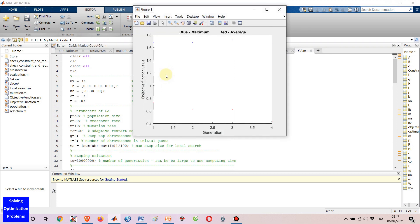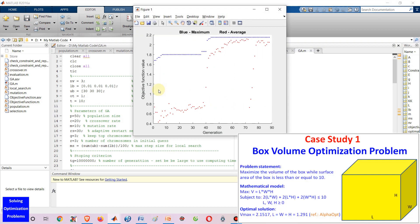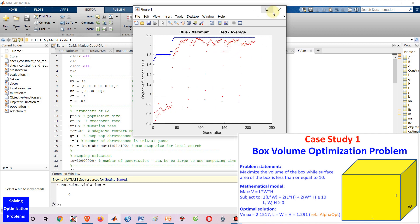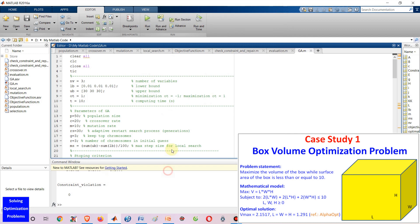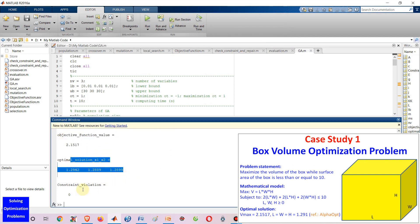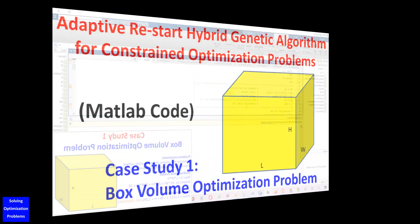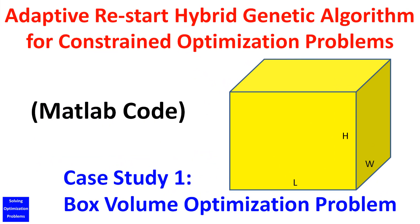In this video, I'm going to show you my innovative version of genetic algorithm, called Adaptive Restart Hybrid Genetic Algorithm for Constrained Optimization Problems. This genetic algorithm is much more powerful than the traditional genetic algorithm because of the restart mechanism and the local search.